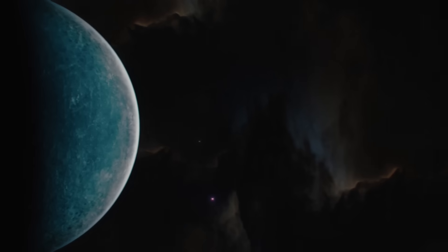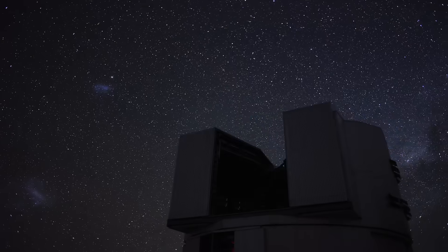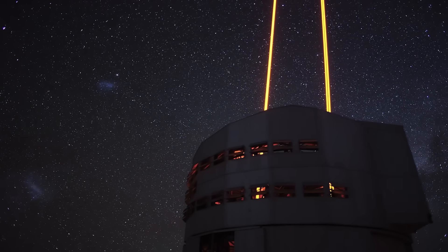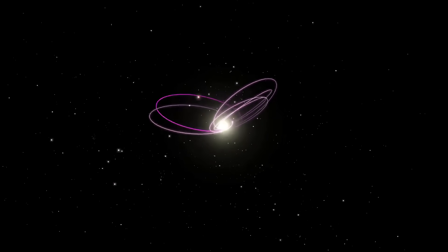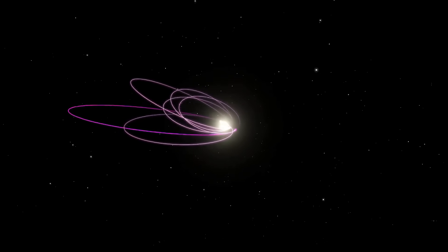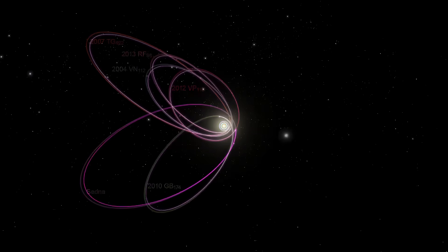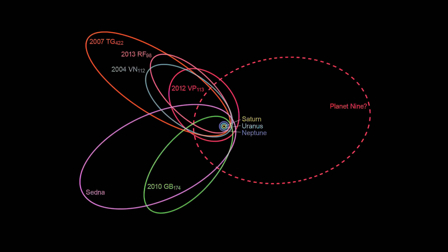Astronomers have been looking for something big, something strange, hiding far beyond Neptune. But spotting it is extremely difficult, as it doesn't show up in any images, but its influence is felt in the orbits of distant icy bodies. Scientists call it Planet 9, and they have been hunting for it for years.